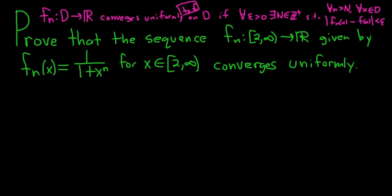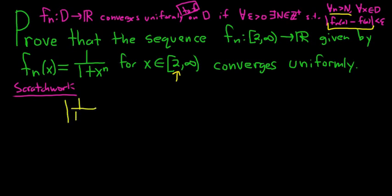Let's go ahead and prove this. Before we prove it, we have to figure out the proof, so let's do some scratch work. To figure out the proof, we need to find an N such that the distance between our sequence and f of x is less than epsilon. Intuition tells us that whenever x is bigger than 2, this should approach zero, because you have one over something that's getting larger and larger. So we'll start by writing down this inequality.